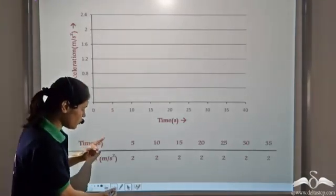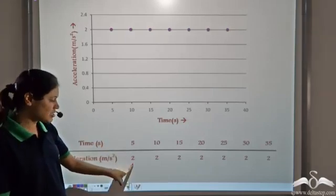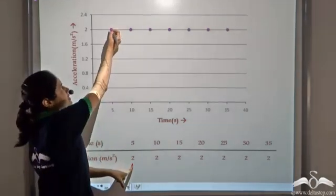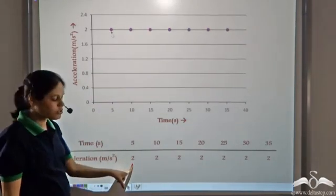Now corresponding to each time period, at 5 seconds, acceleration is 2 m per second square. So at 5 seconds, we mark a point corresponding to 2 m per second square.